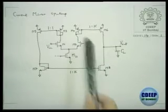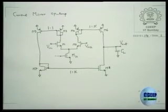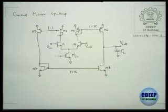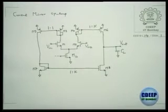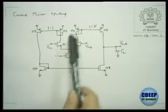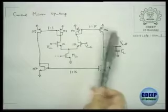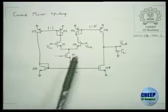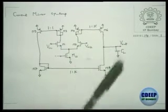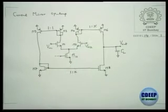Because the load is diode connected, most of the current generated by M2 — the short circuit small signal current which is Gm·vid/2 in each branch — will flow through M3 and M4, and therefore it will create a voltage there. So if you want to transfer this current to the next stage, instead of using a cascade which transfers voltage, we transfer current to the next stage — that's why it is called the current mirror op-amp. M6 and M8 can be considered as the second stage.